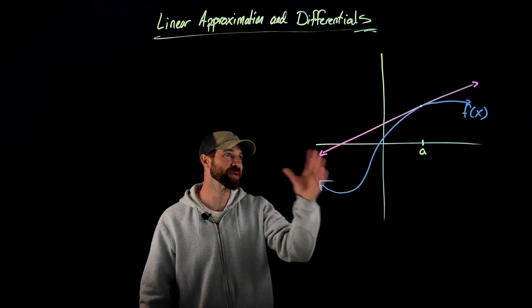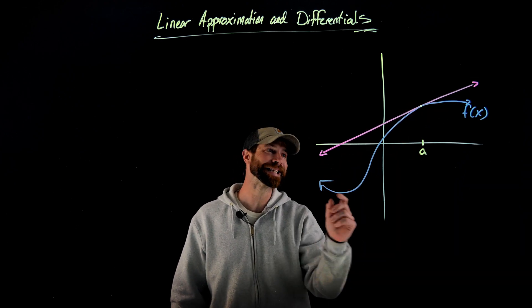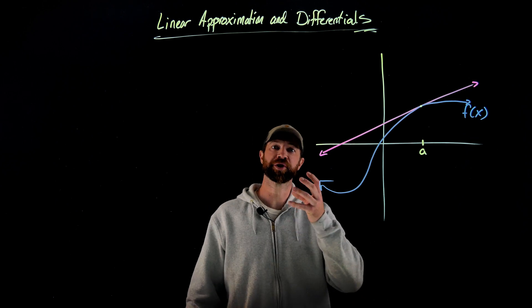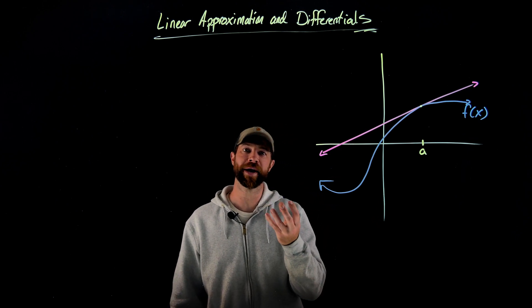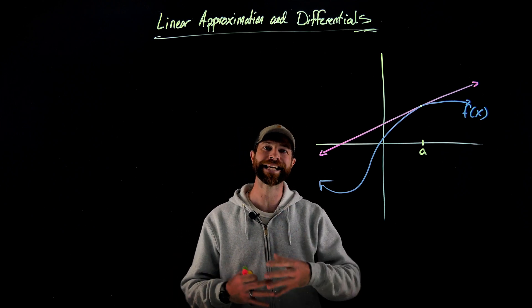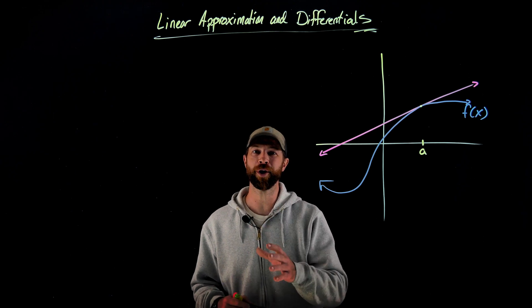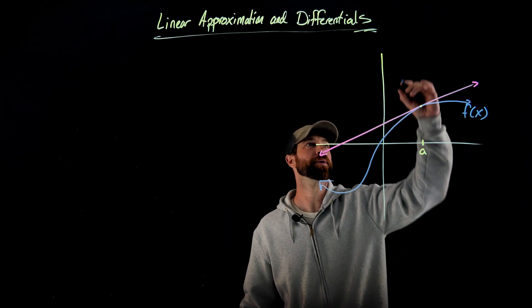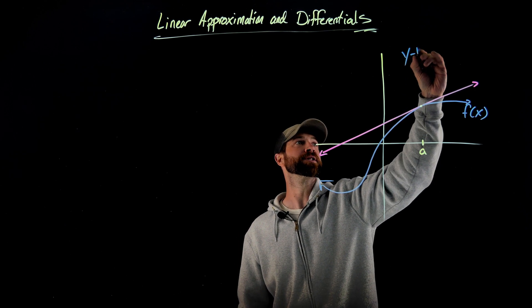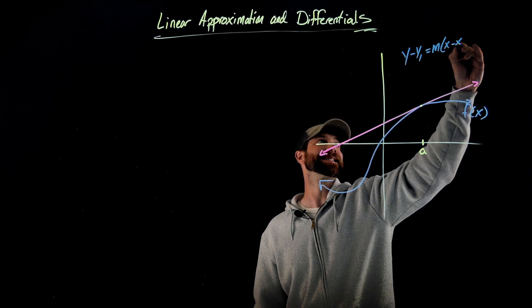I have a representative function here I'm calling f of x. This pink line right here is the line tangent at the x value of a. The goal is to quickly write the full equation for this form. We're going to use function values and derivative values to represent the tangent line equation. You should know about the point-slope form of a linear equation: if we have a point x1 and y1, it'd be y minus y1 equals m times x minus x1.